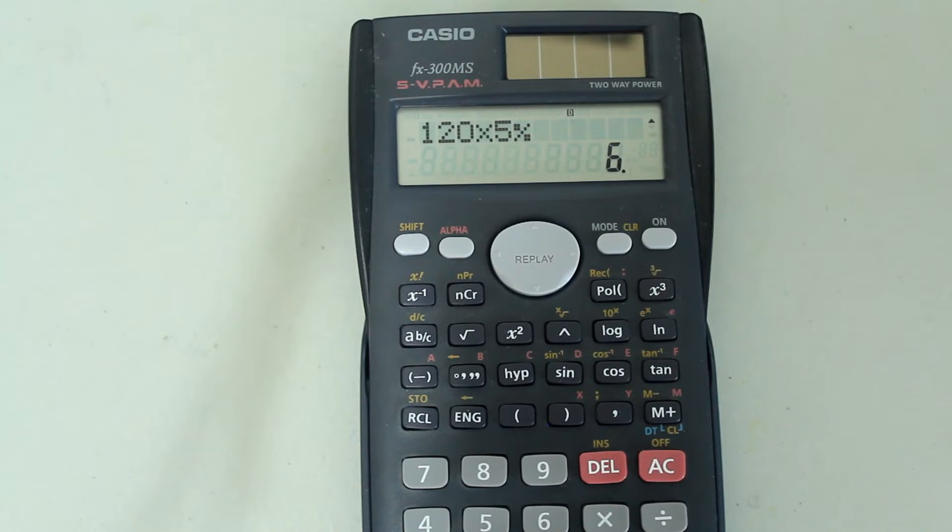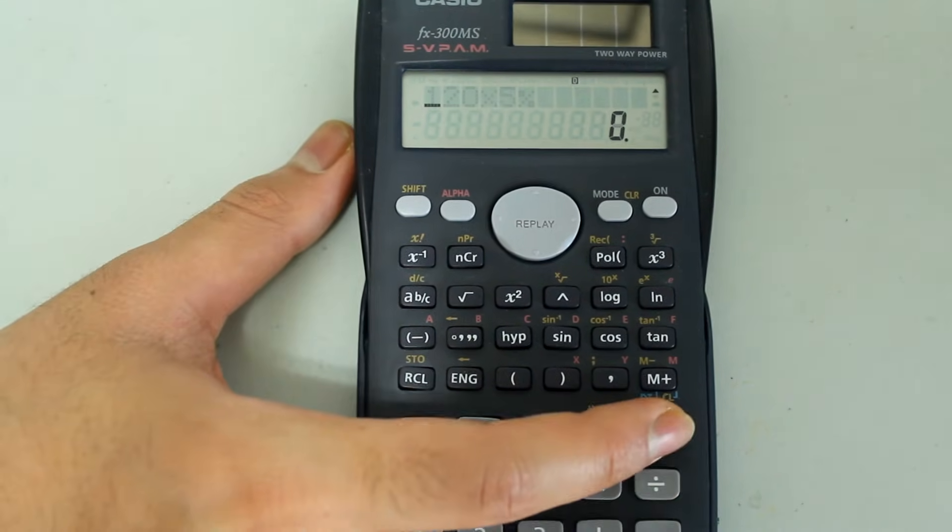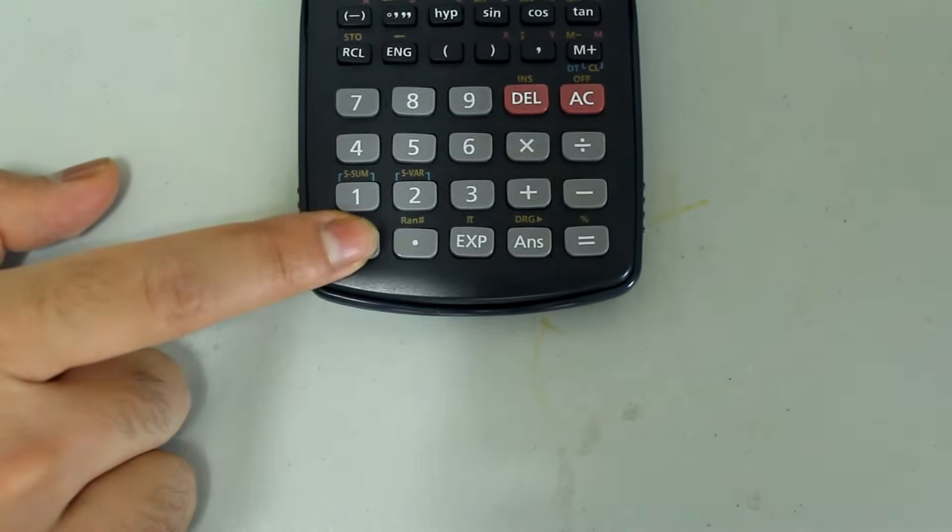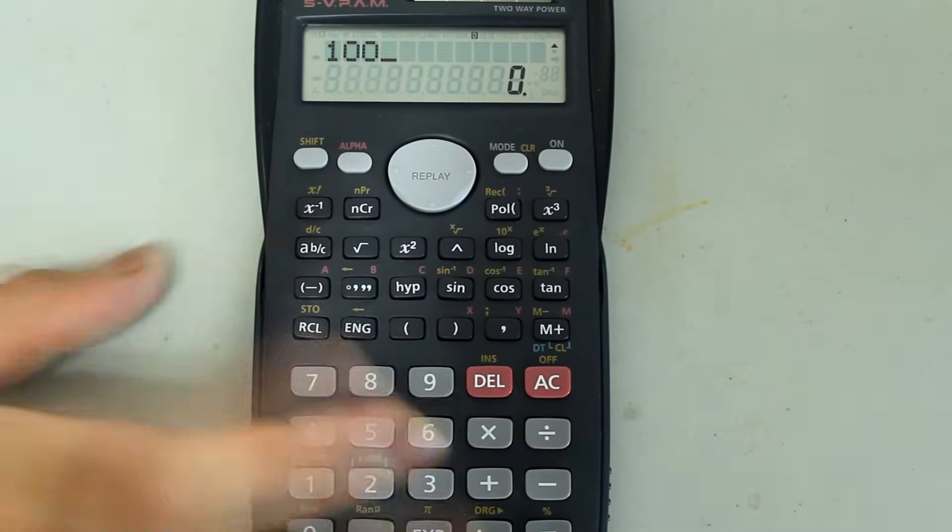Now let's say you're trying to figure out what number 100 is 10% of. So what would you do in that case? So let's clear that out. First, type in 100, and instead of multiplying this time,